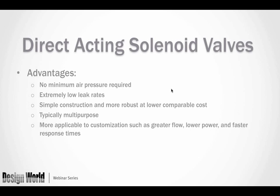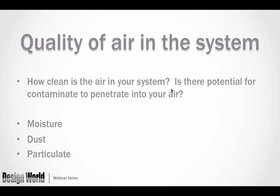Direct acting valves often feature extremely low leakage — particularly with a poppet — simple construction with no second valve on the body, and multi-purpose capability. In a three-way function you can pressurize what would normally be the exhaust port, or use it as a selector or diverter, since no internal air pressure is needed to move the spool. When properly sized and designed as a balanced valve, you still get low power consumption, and because the solenoid connects directly to the spool or poppet without double movements, you get very fast response times.